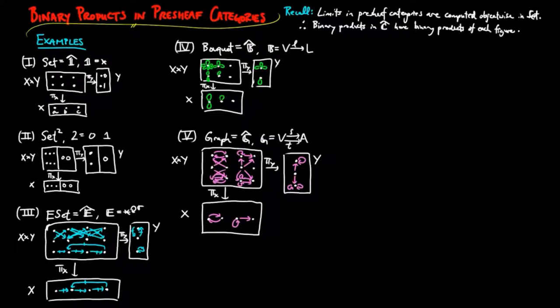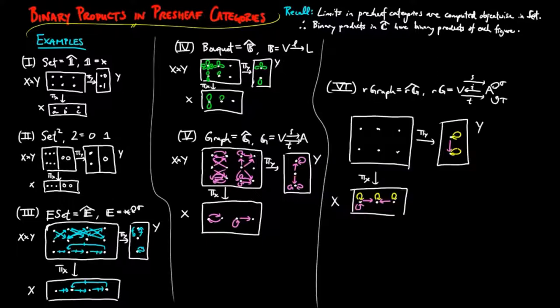In the category of reflexive graphs, given reflexive graphs X with three vertices and six arcs, and Y with two vertices and three arcs, with the yellow arcs being the distinguished arcs, the product has six — three times two — vertices and 18 — six times three — arcs. Again, we have vertical projection to X and horizontal projection to Y as these contractions.